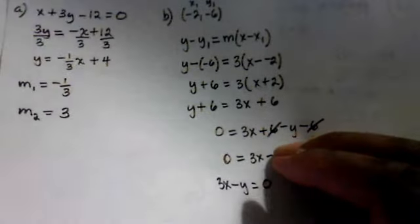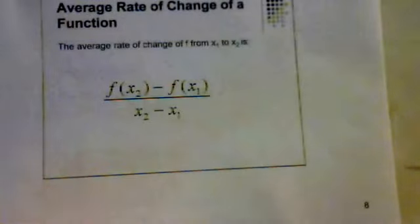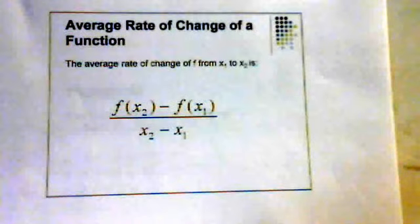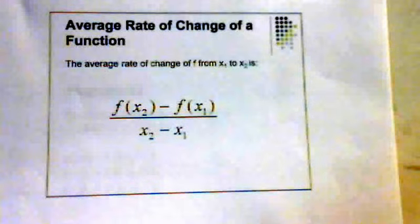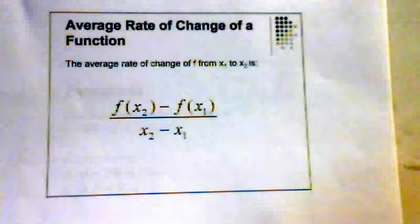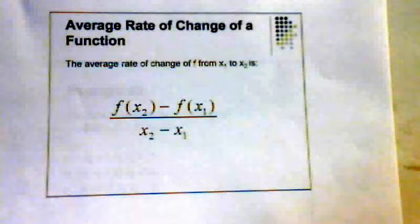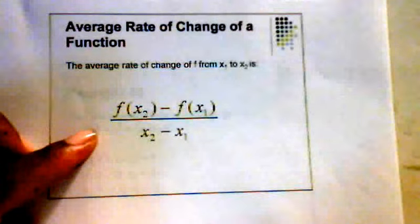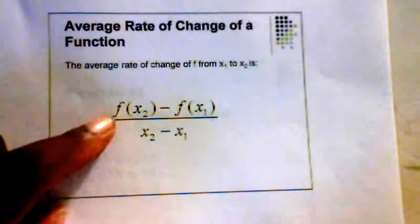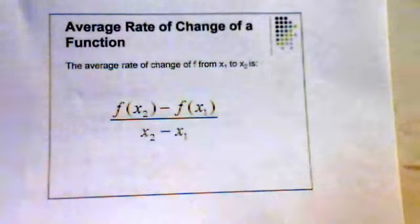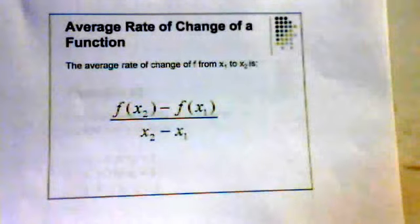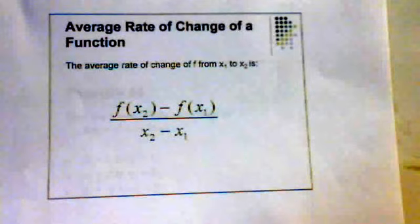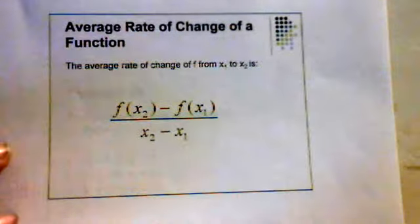The next thing we'll look at is the average rate of change of a function. The average rate of change of a function f from x1 to x2 is: f of x2 minus f of x1, divided by x2 minus x1. This is another way of writing a formula for slope — instead of y2 minus y1, we use f of x2 minus f of x1. You'll be given a function and values for x1 and x2, and you need to find f of x1 and f of x2 to use this formula.